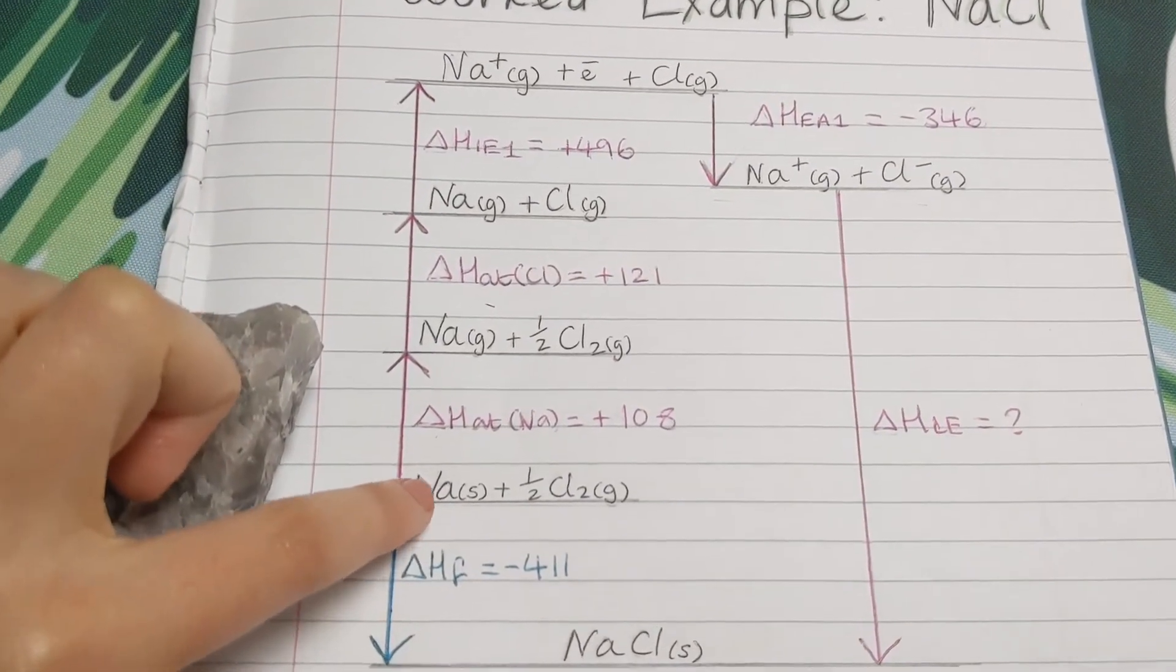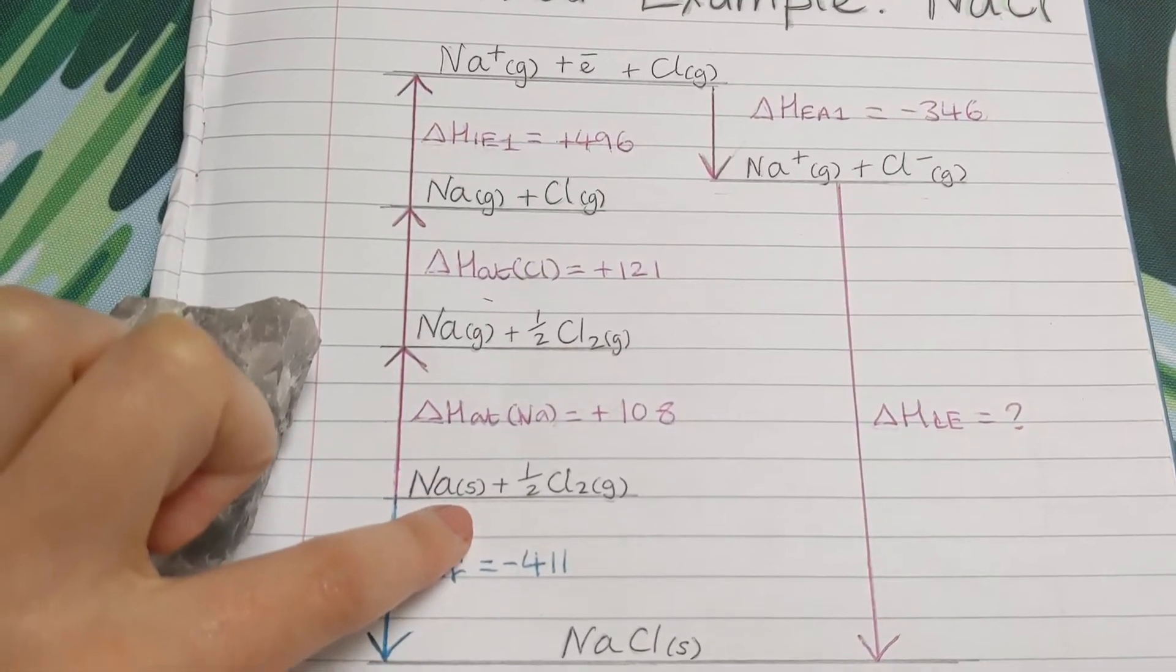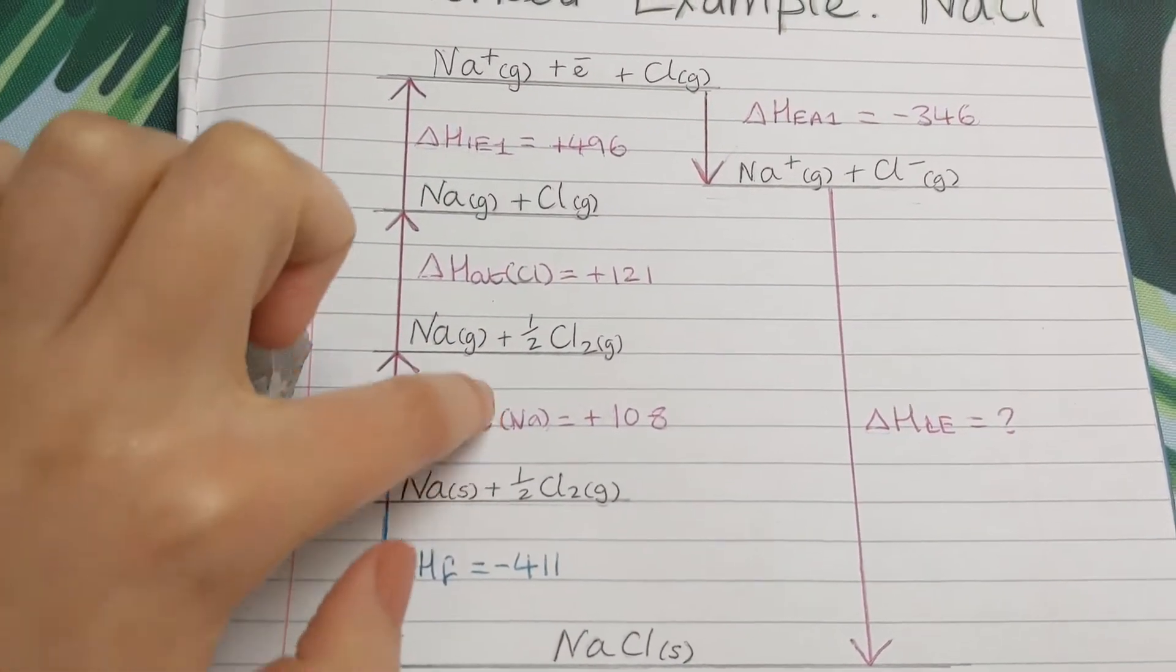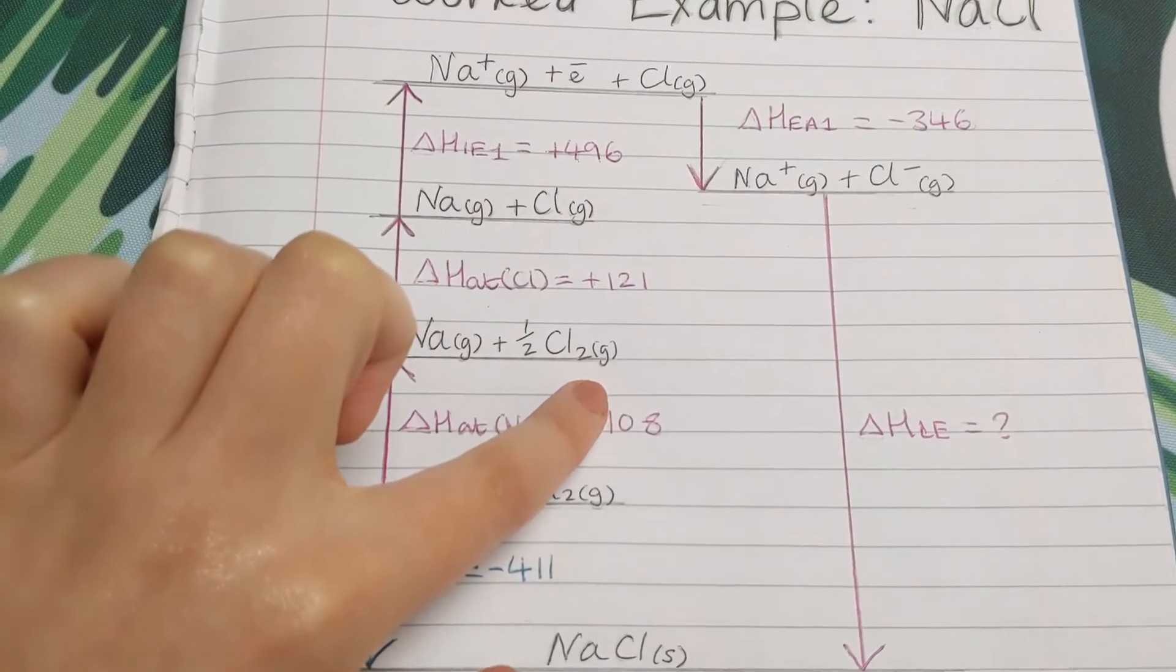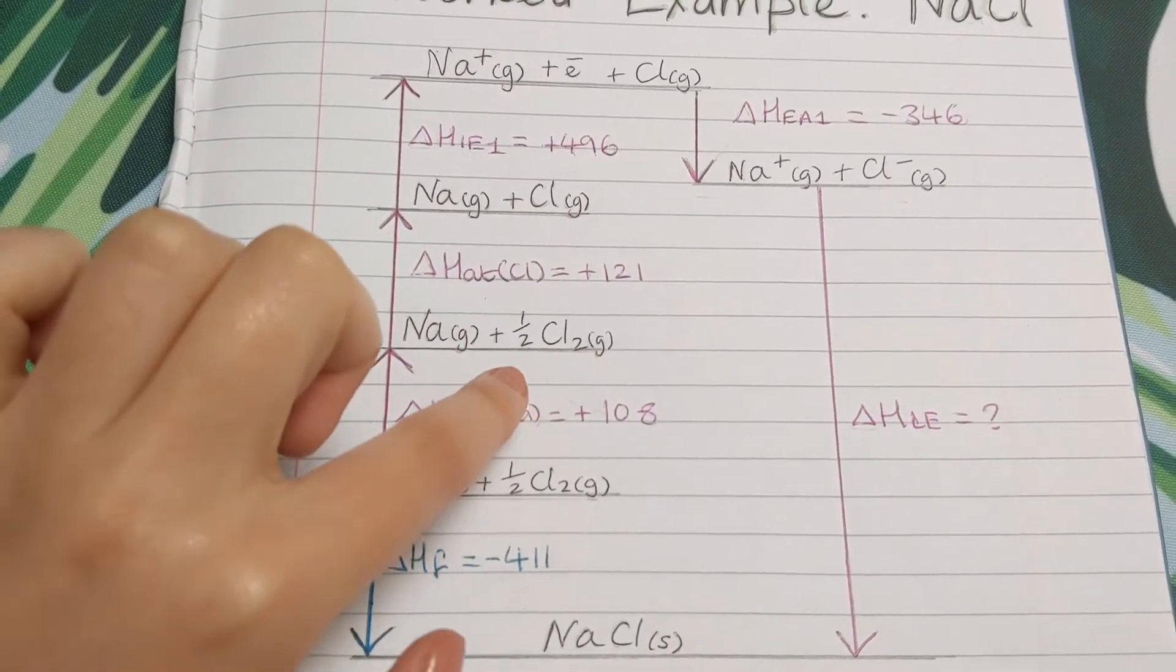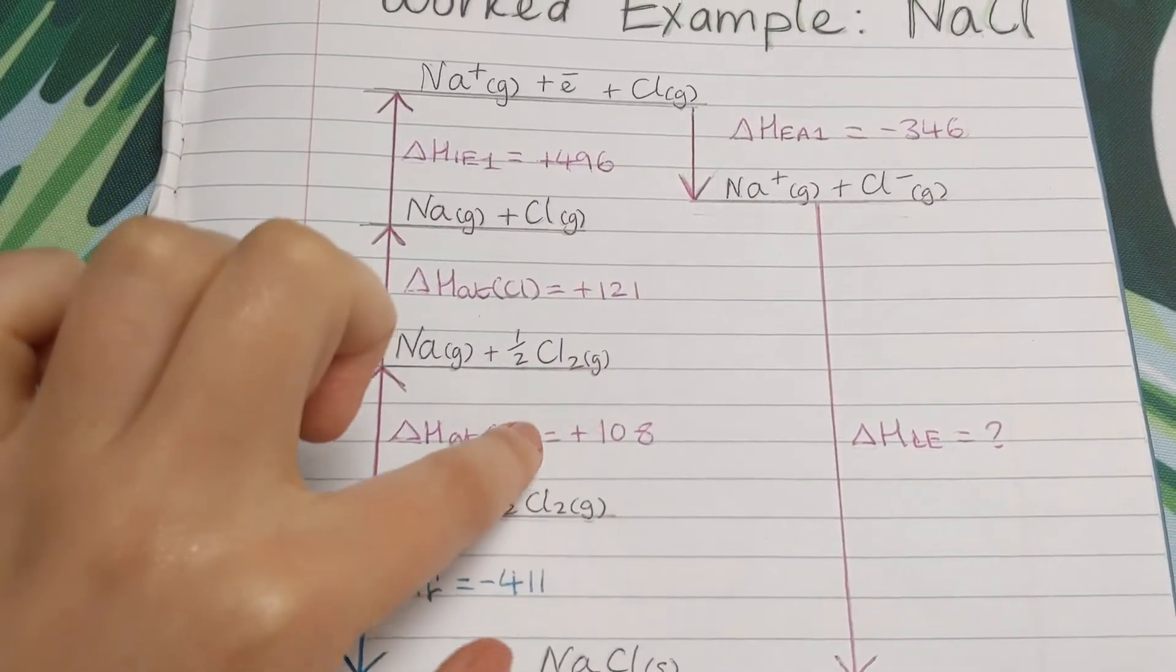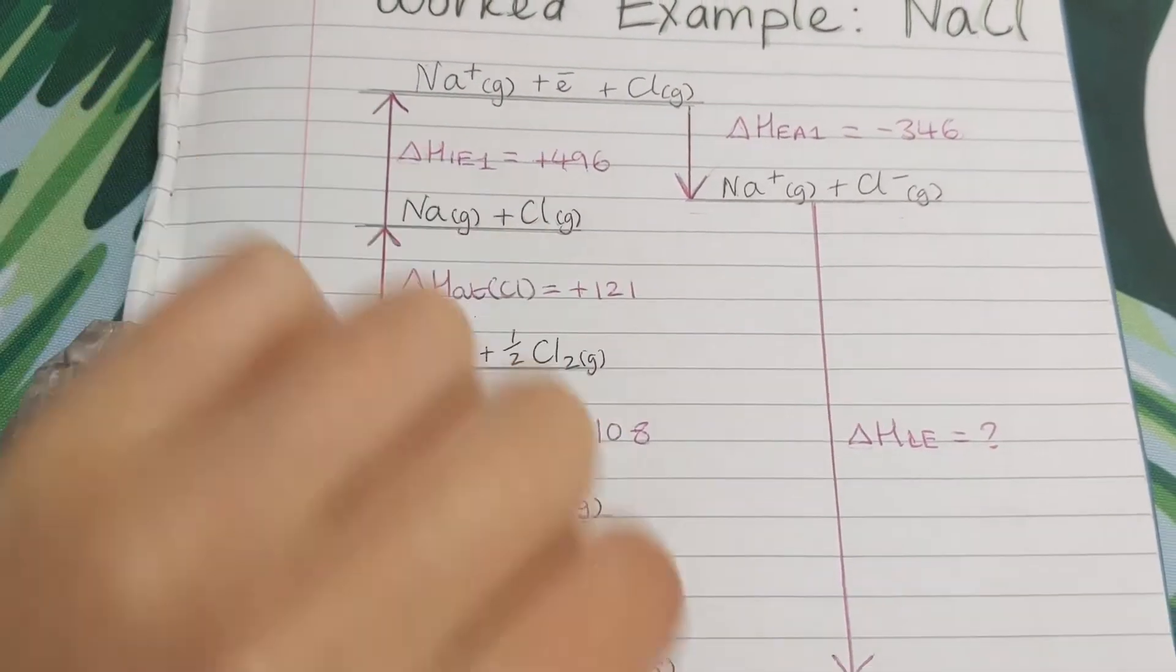Then the next step, we're atomising the sodium. So we can see that the sodium's gone from sodium solid to sodium gas. And then the next step, we're atomising the chlorine. It's already a gas, but we're forming one mole of atoms. So here we've got a diatomic molecule. We've just got the half in front of it to balance. So now we get rid of that and we're just forming one mole of atoms, Cl gas.